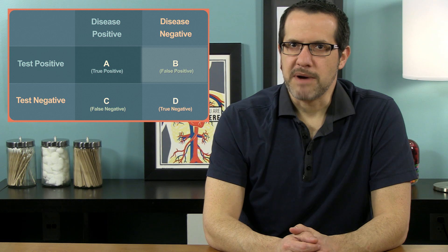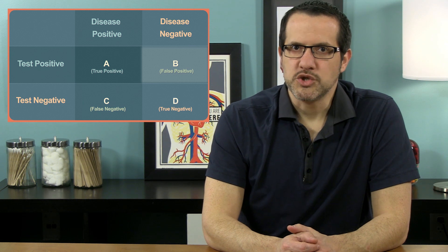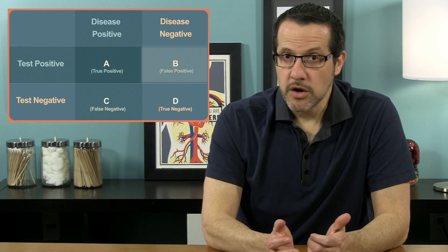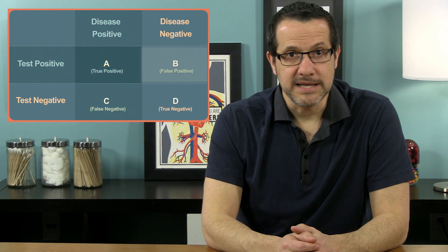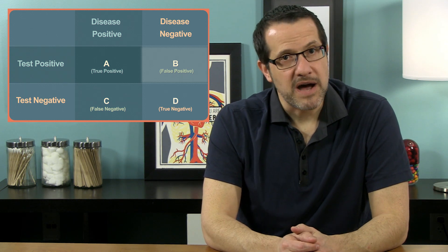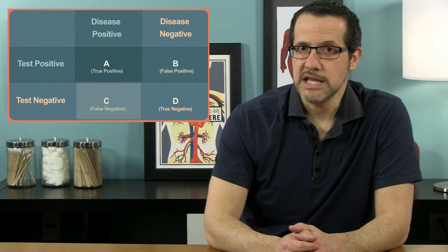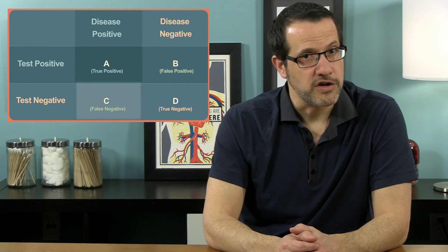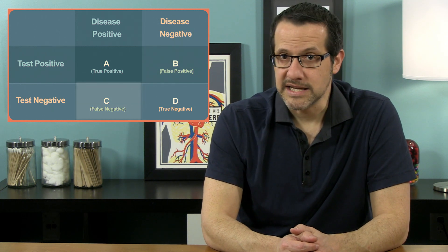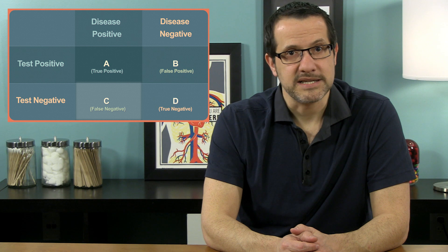Some patients wind up in box B, which we call false positives — they don't have the disease but they do have a positive test. And some patients wind up in box C, which we call false negatives — they have the disease but the test doesn't pick it up. We use these ideas to calculate two test characteristics: sensitivity and specificity.